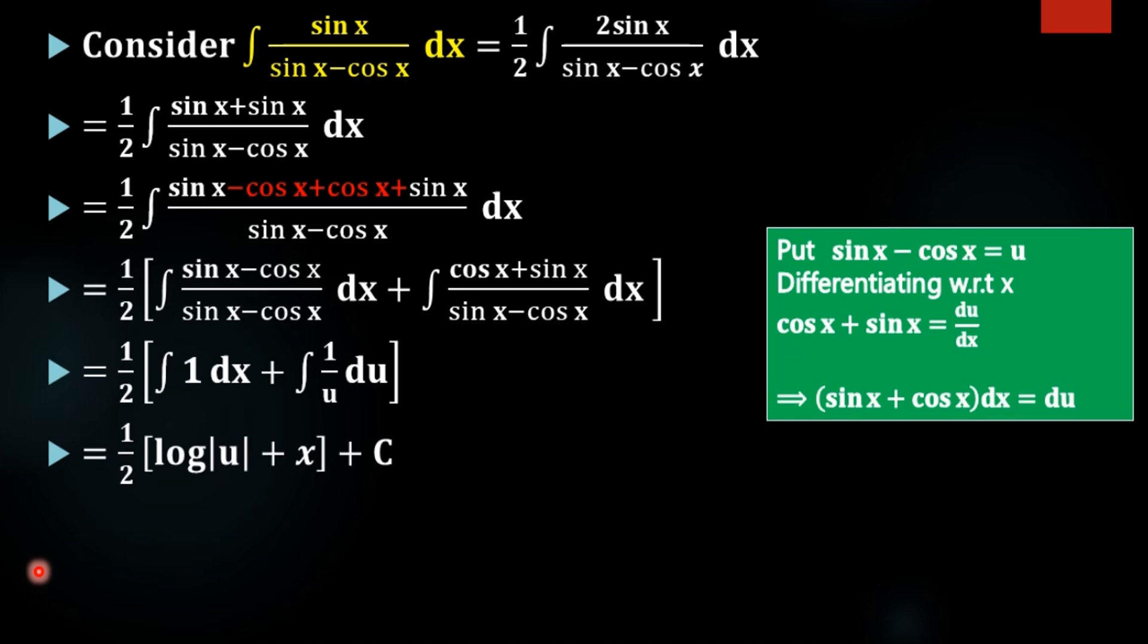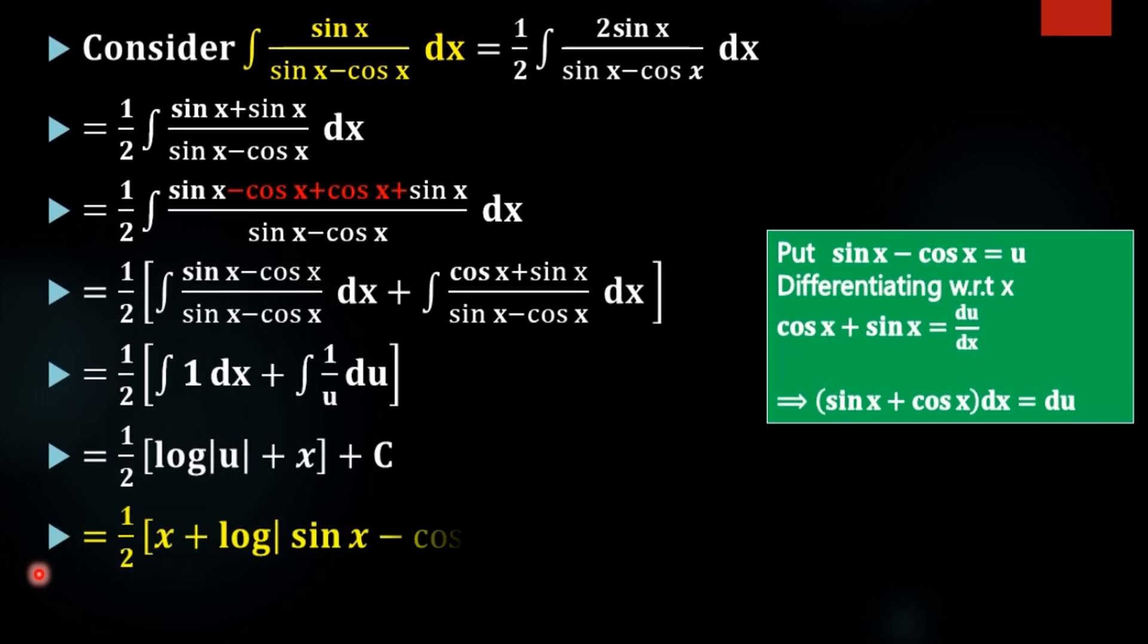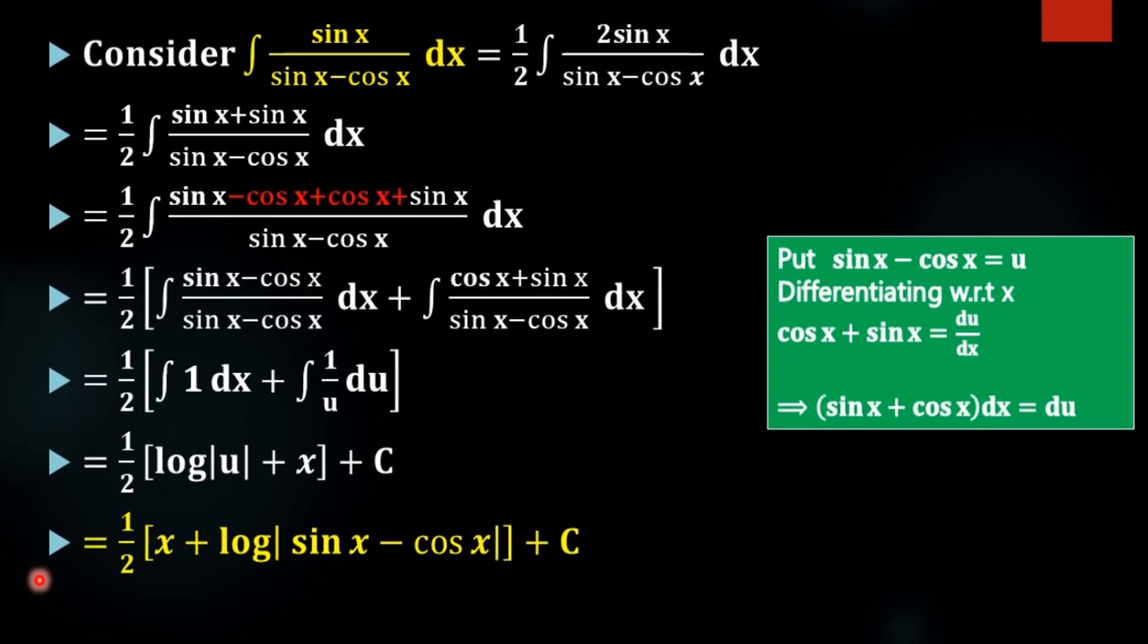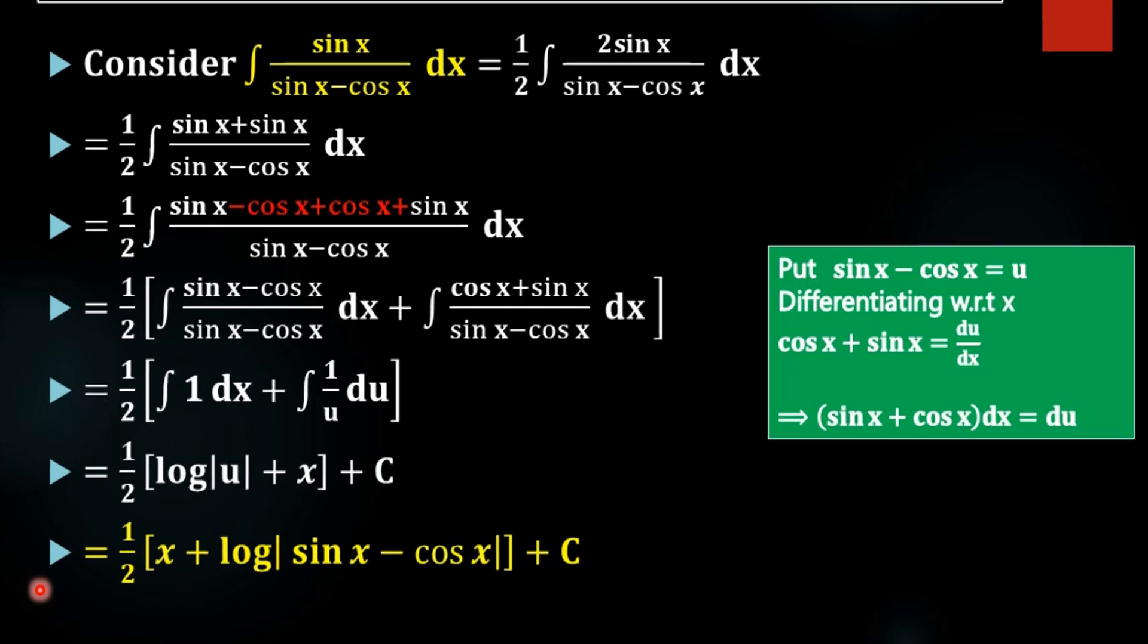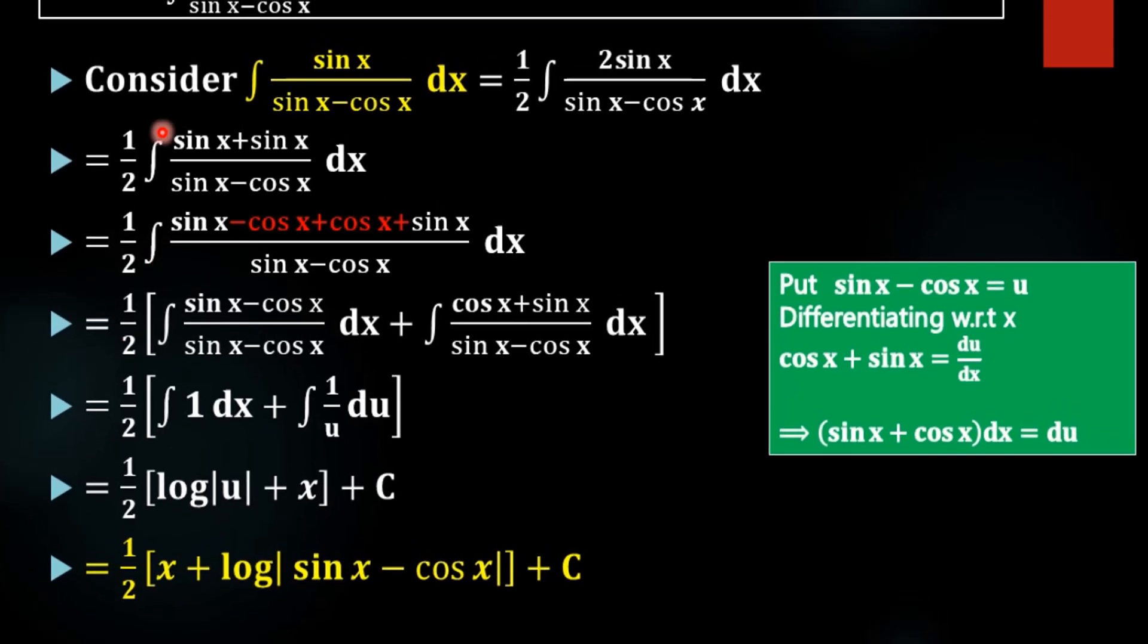Now what is u? Sin x minus cos x. So half of x plus log mod sin x minus cos x plus c, which is the required result.